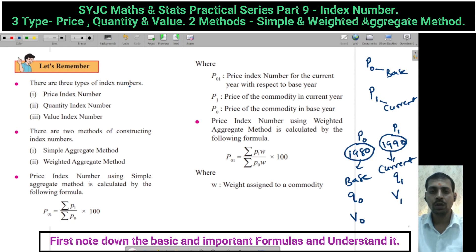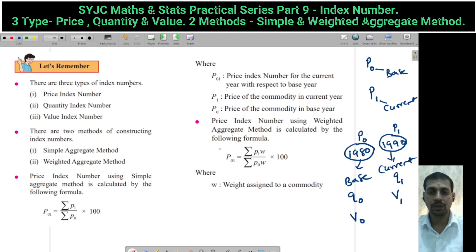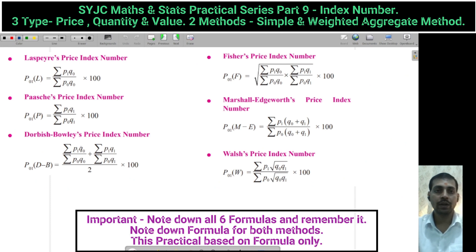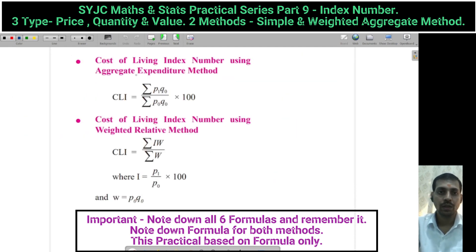Now, what is W? W is weight. Sometimes quantity or value is given as weight. We will use summation P1W upon summation P0W into 100. These are called Weighted Index Numbers. There are 6 statisticians who worked on Index Numbers: Laspeyres, Paasche, Fisher, Marshall, Aguilar, and Walsh.